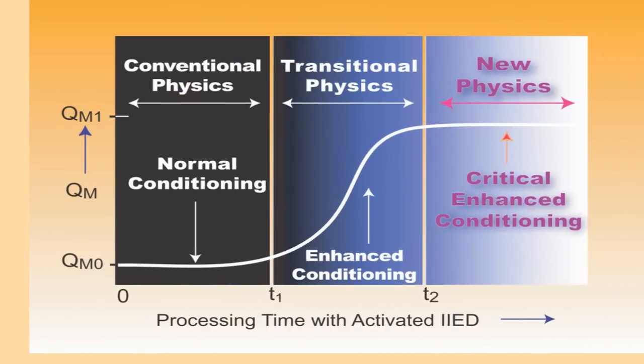What I have plotted here on the vertical axis is the magnitude Q sub m of a particular material property. On the horizontal axis, I have plotted the exposure time to the appropriate intention host device. Here the label IIED means intention imprinted electrical device.